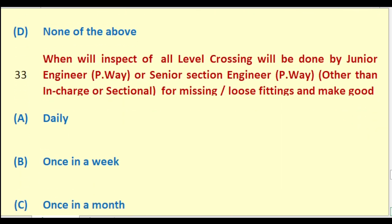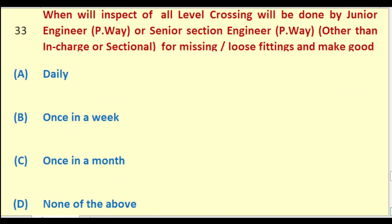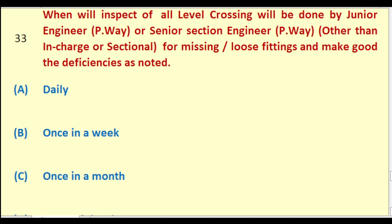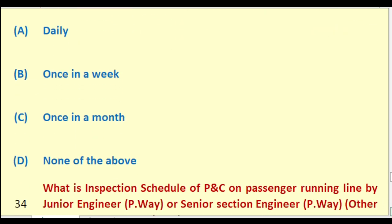When will inspection of all level crossings be done by Junior Engineer Permanent Way other than in charge or sectional, for missing/loose fittings and to make good the deficiencies noted? Options: daily; once in a week; once in a month; none of the above. The right answer is: once in a month.